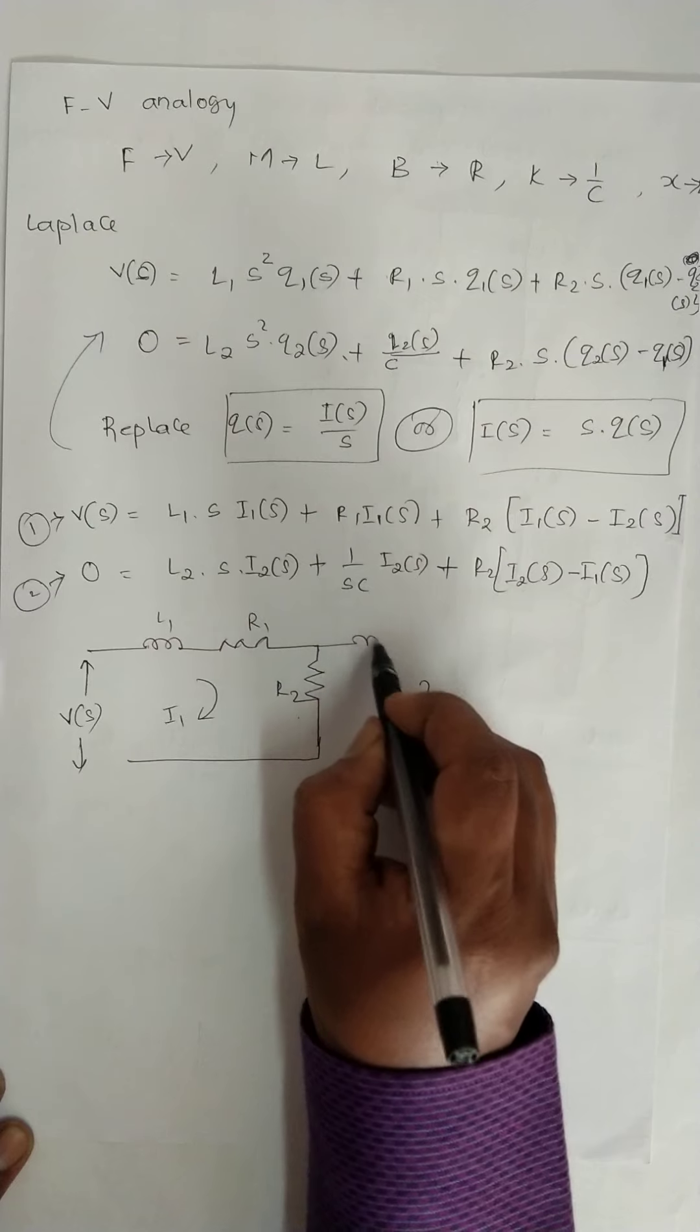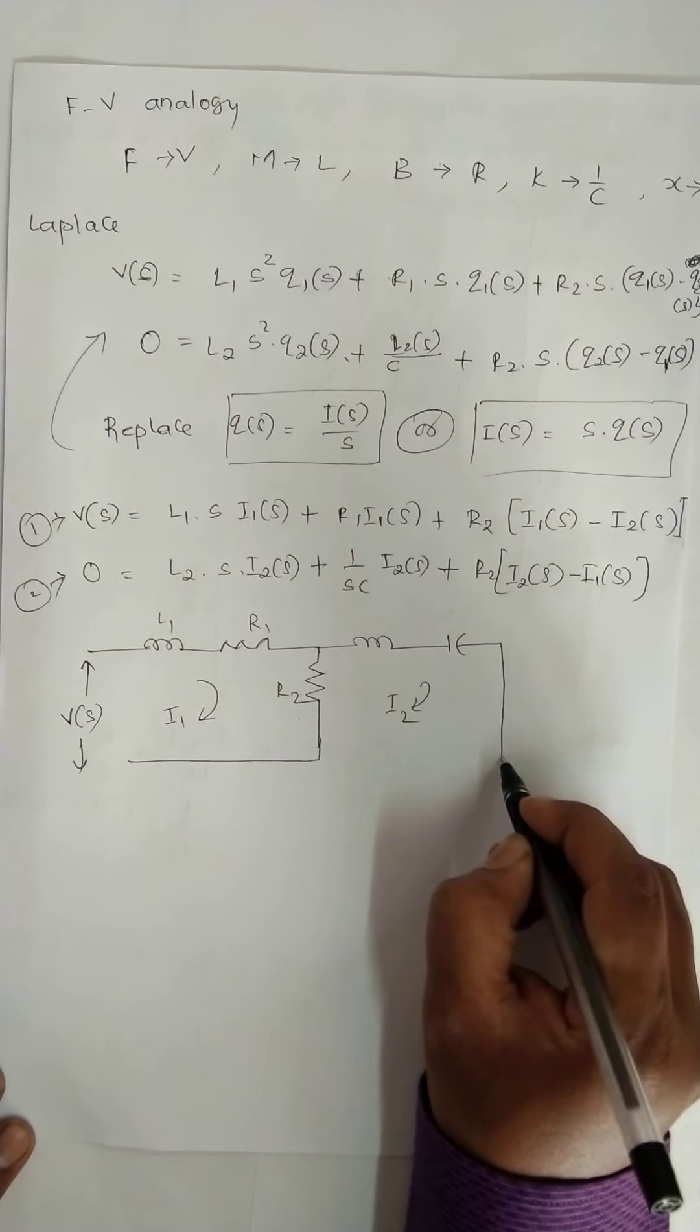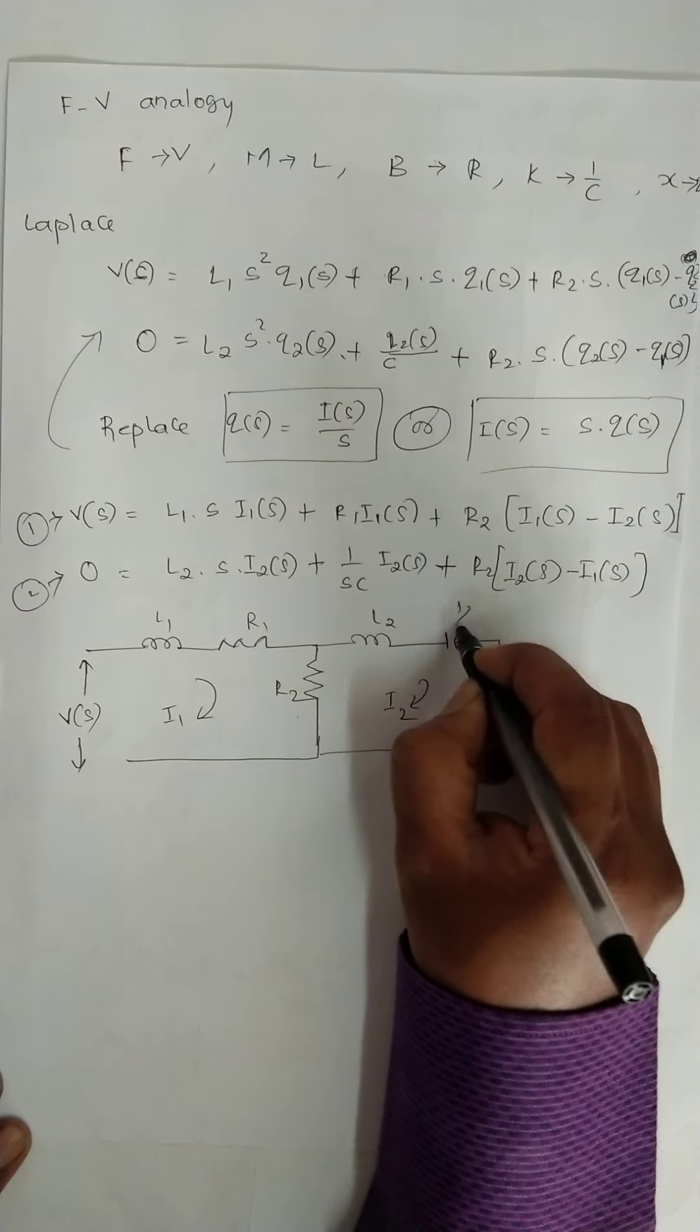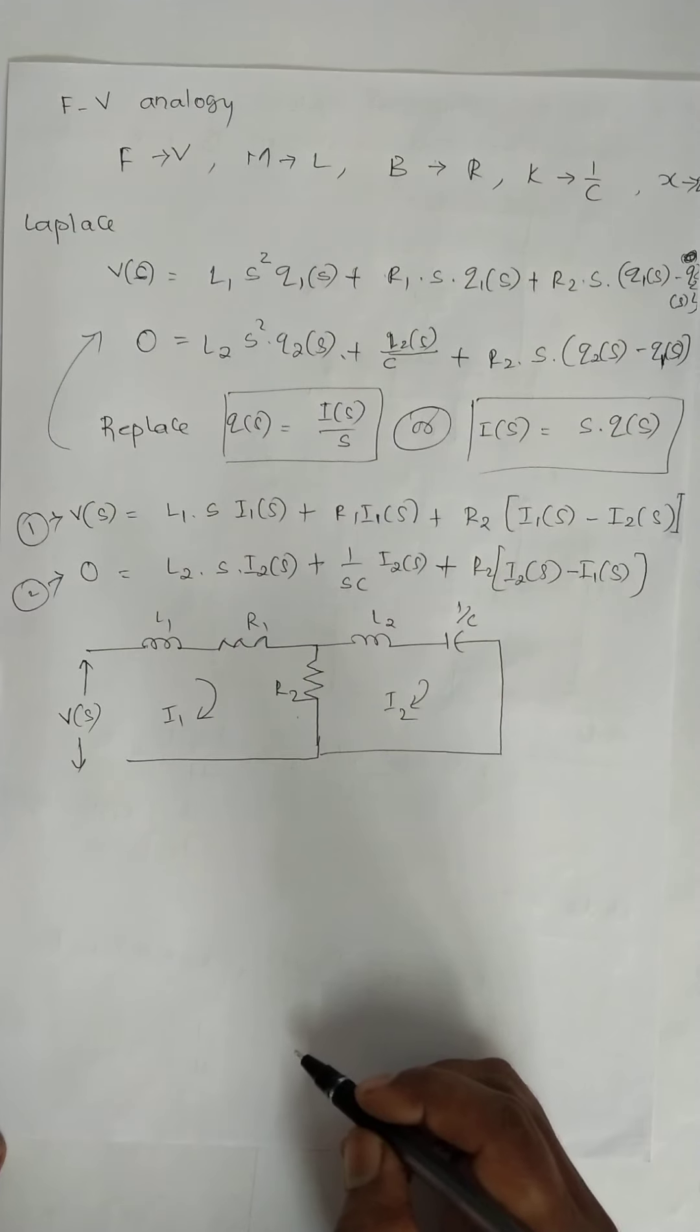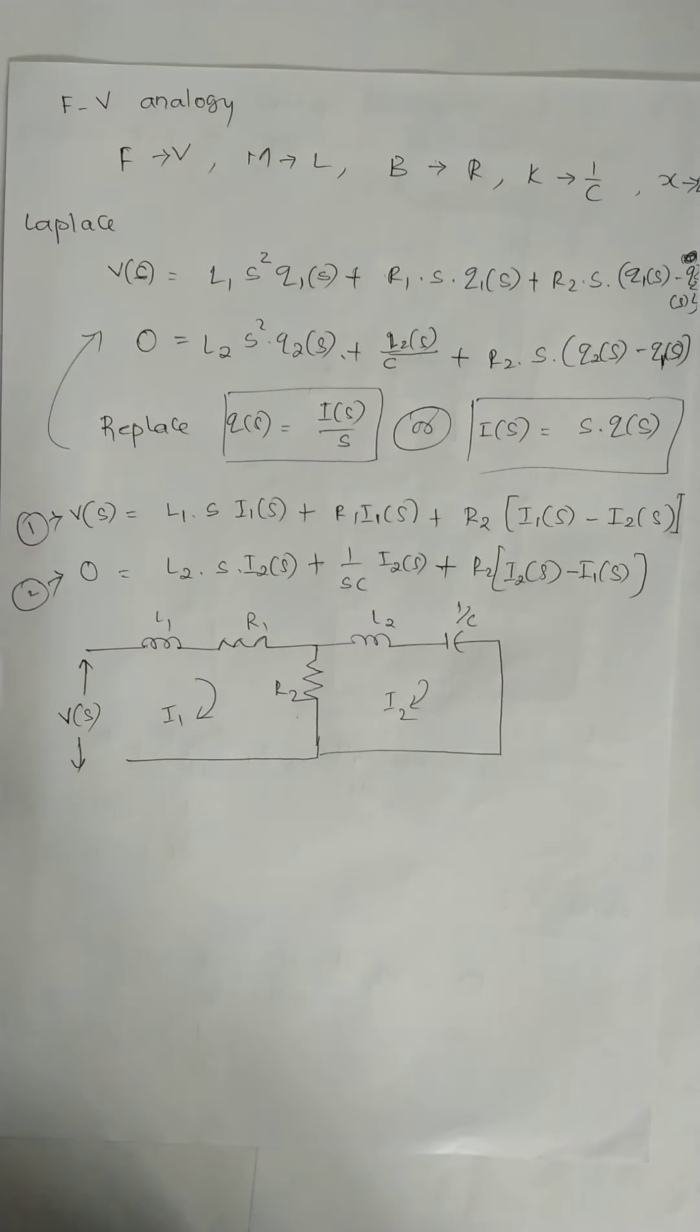Next is L2 and capacitance. So R2 is already drawn, then L2 and 1/C. So this is the force voltage analogy problem. Thank you.